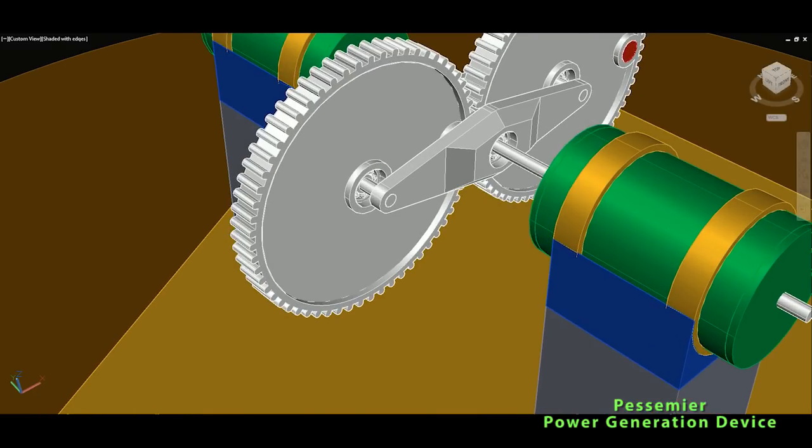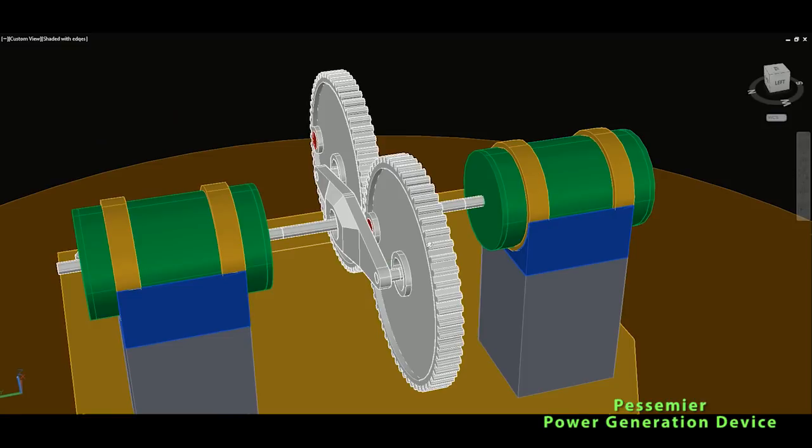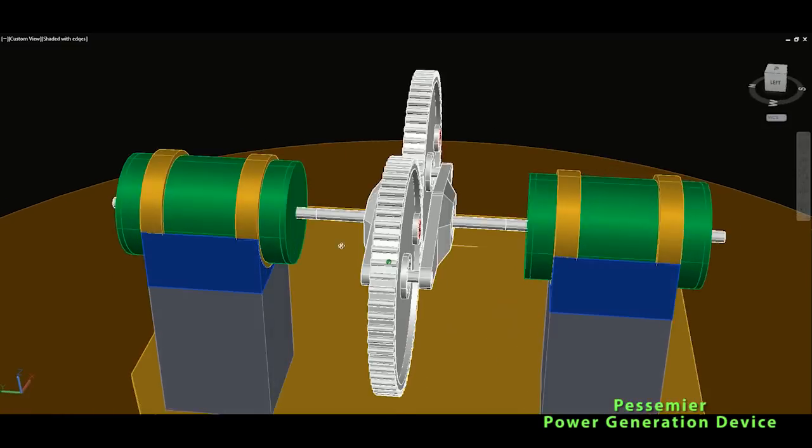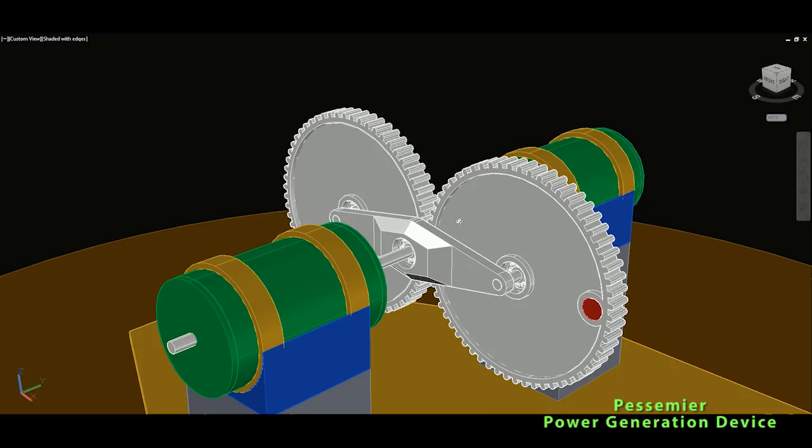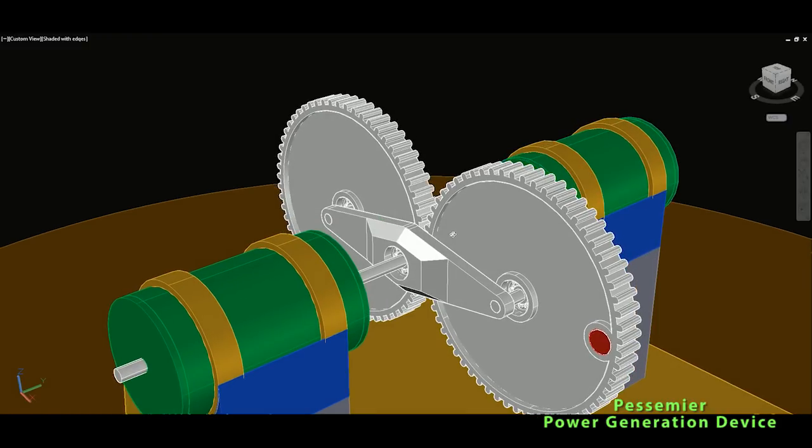So this is the flywheels, center flywheels and they will of course rotate in the vacuum chamber. So generally we do not expect the resistance from the air.